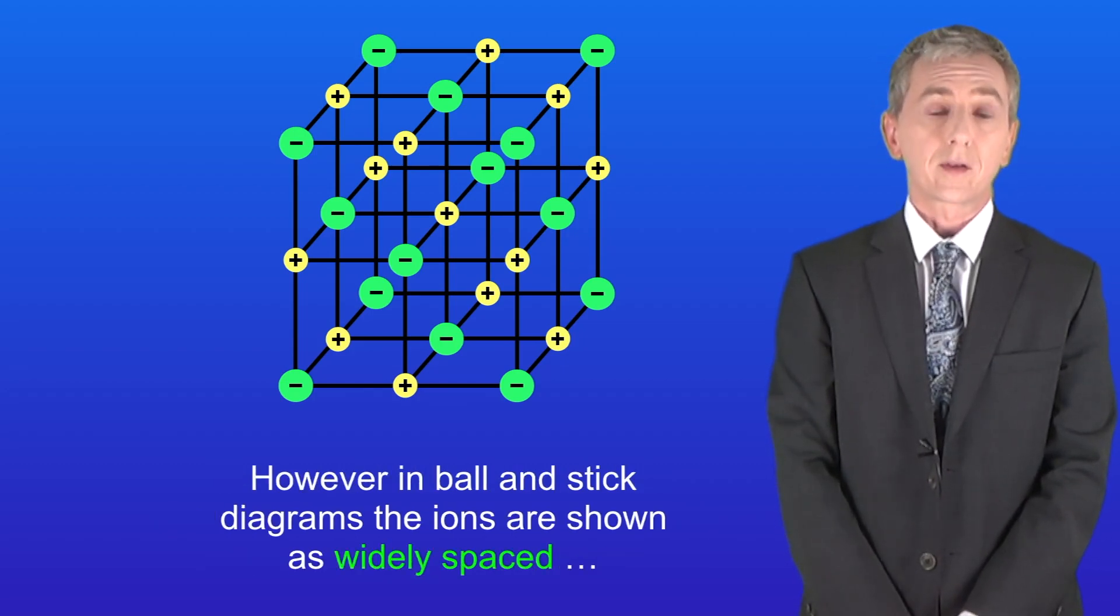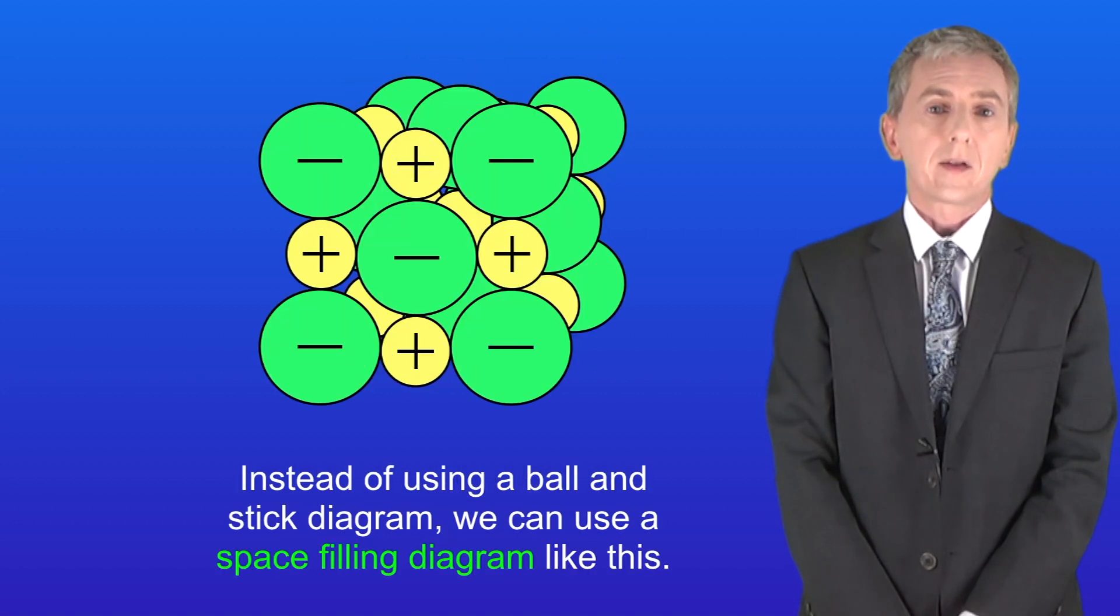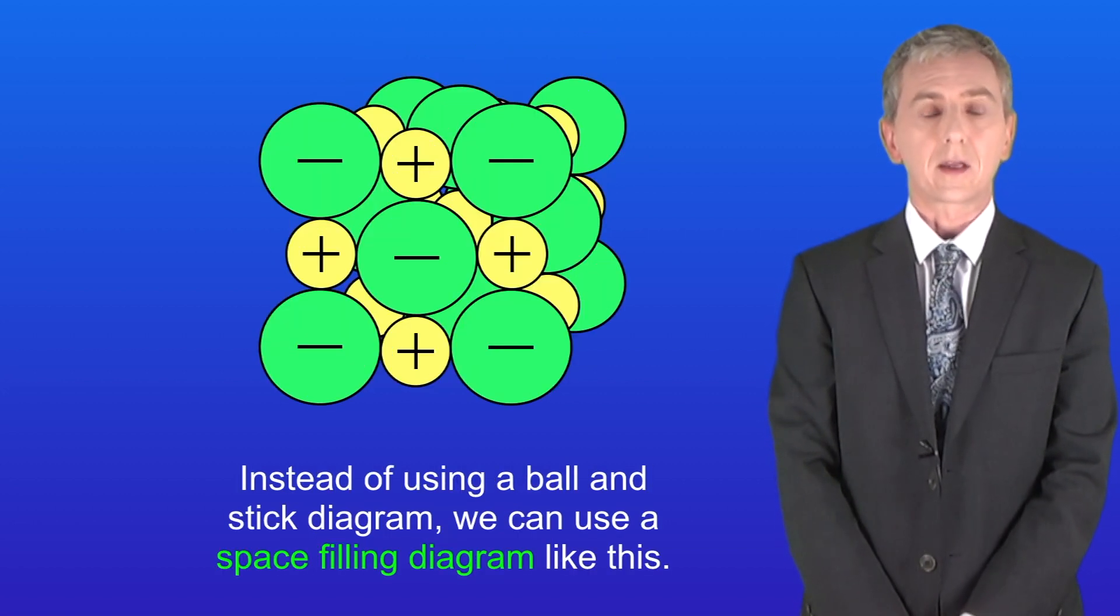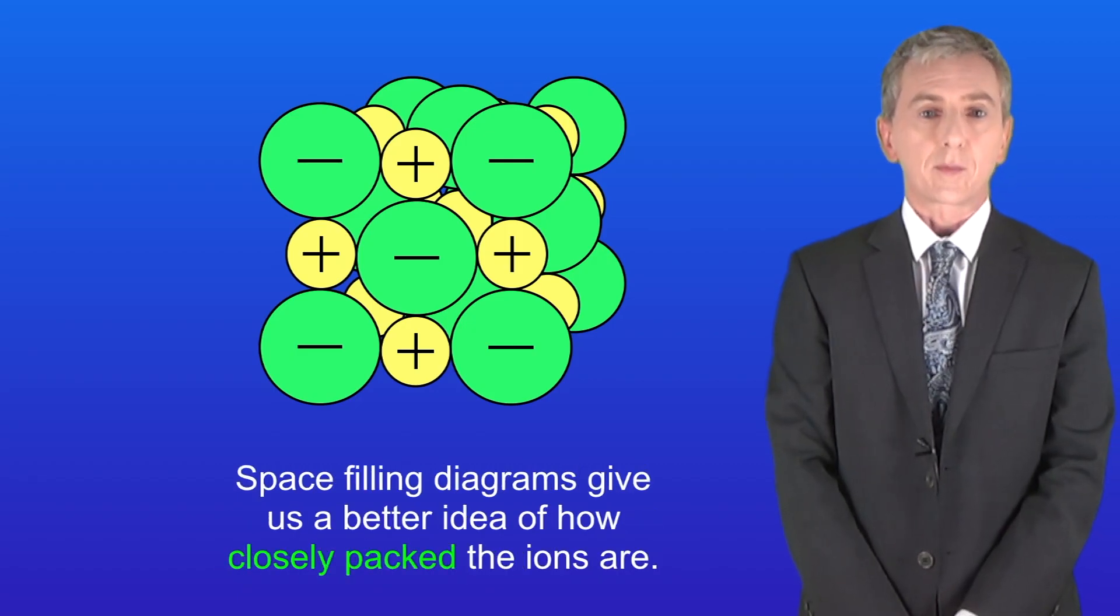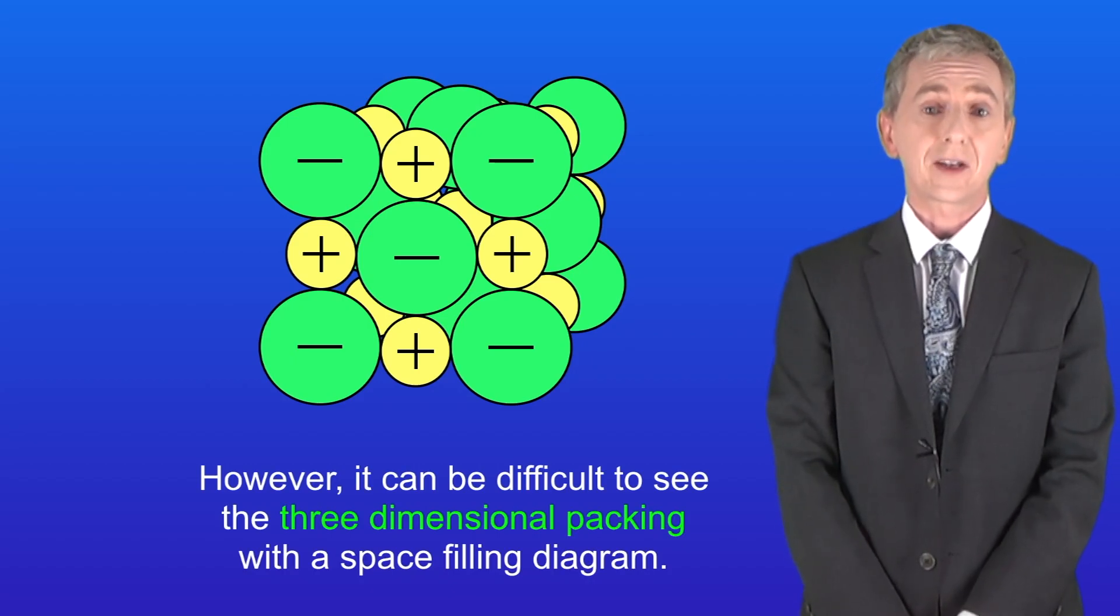However, in ball and stick diagrams the ions are shown as widely spaced when in reality the ions are packed together. Instead of using a ball and stick diagram we can use a space filling diagram like this. Space filling diagrams give us a better idea of how closely packed the ions are. However, it can be difficult to see the three-dimensional packing with a space filling diagram.